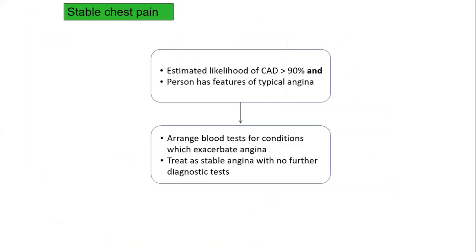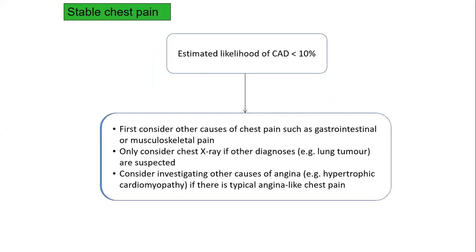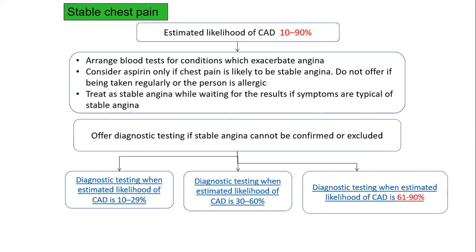If the estimated likelihood is more than 90% and the person has features of typical angina, we can proceed with investigations to test for conditions that exacerbate angina, and the patient has to be started on treatment for stable angina immediately with no further diagnostic tests. If it is less than 10%, we consider other causes of chest pain and investigate other causes like hypertrophic cardiomyopathy. In our case it was 10 to 90%, so we do further blood tests and start treatment while awaiting investigations.